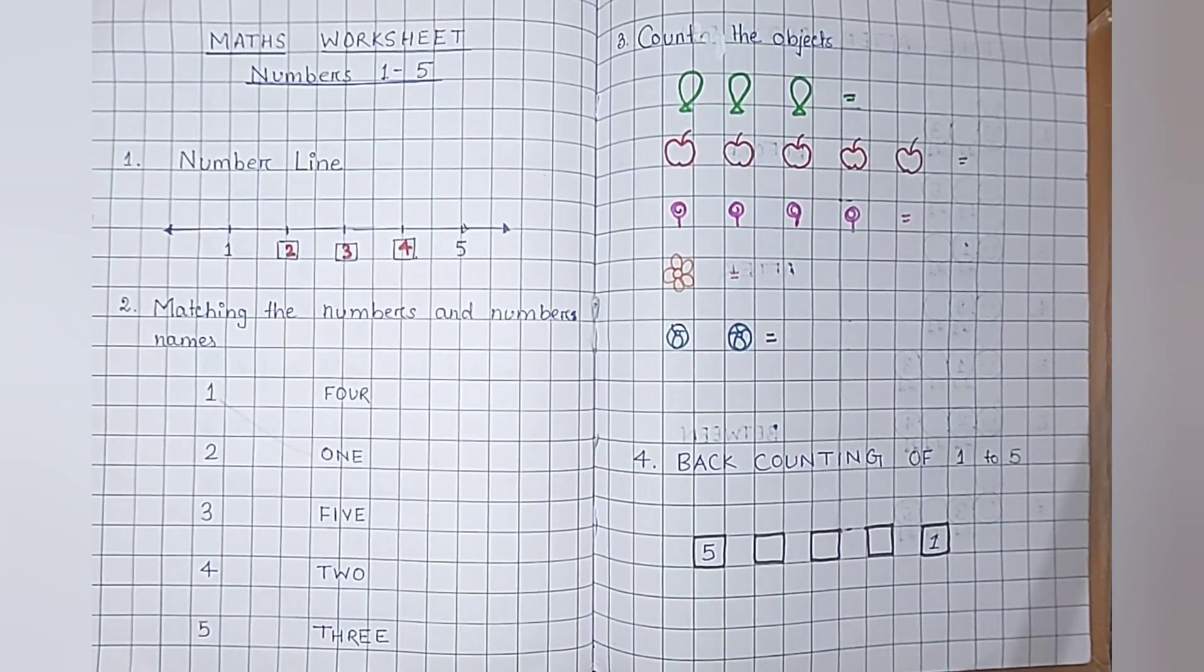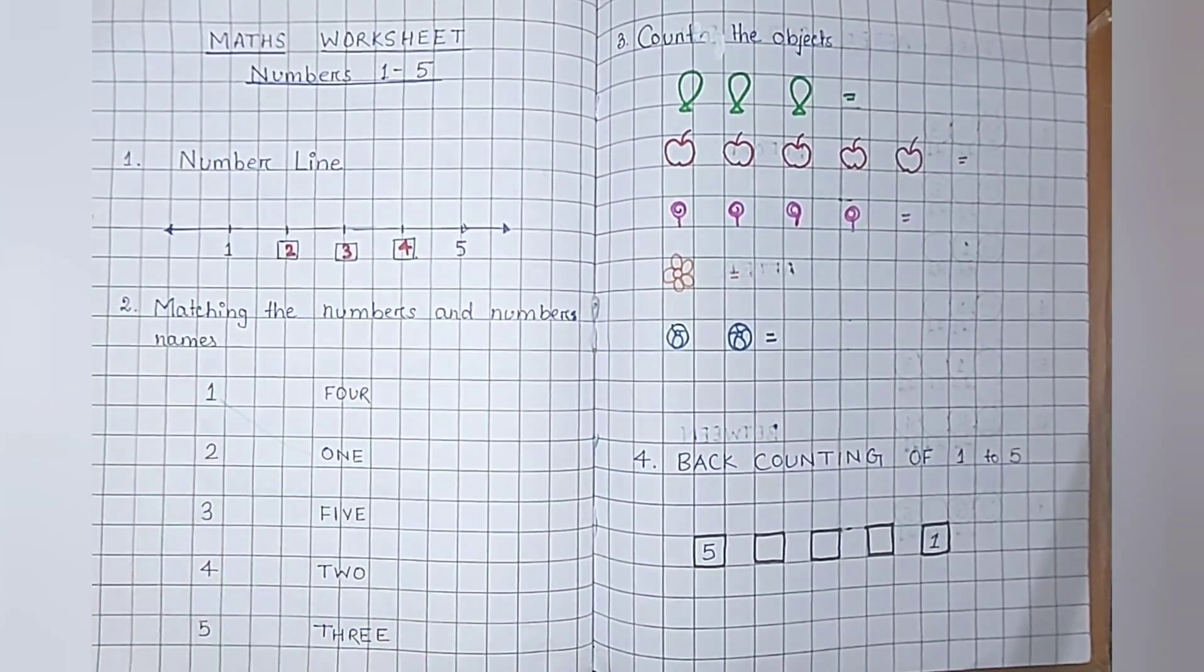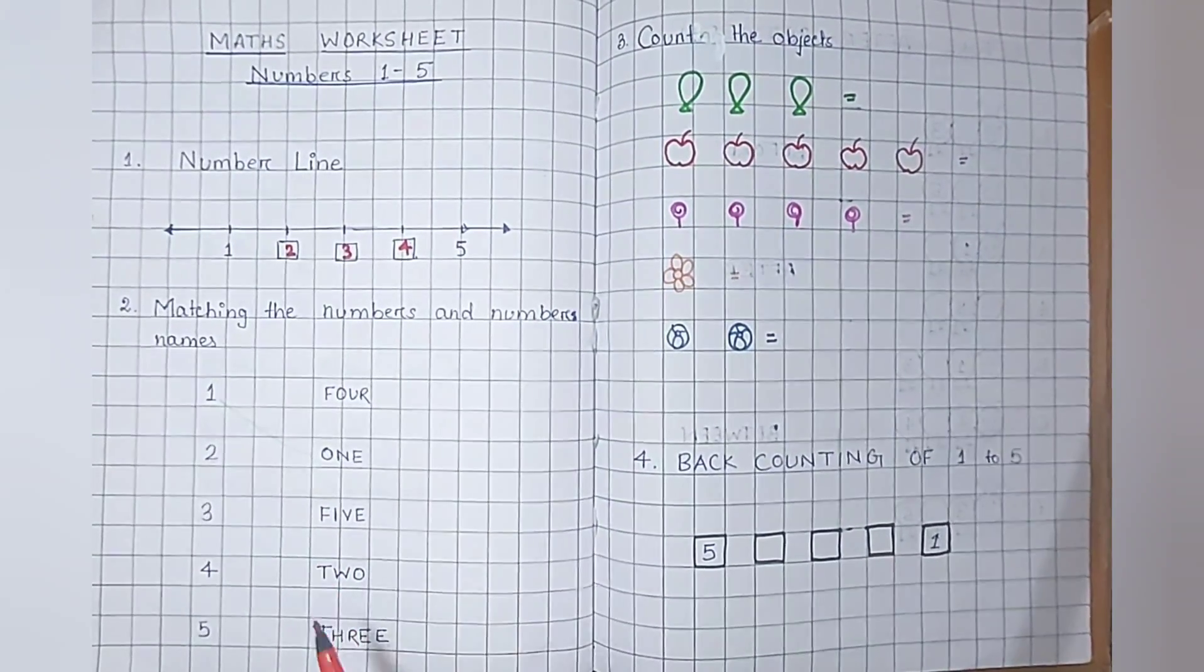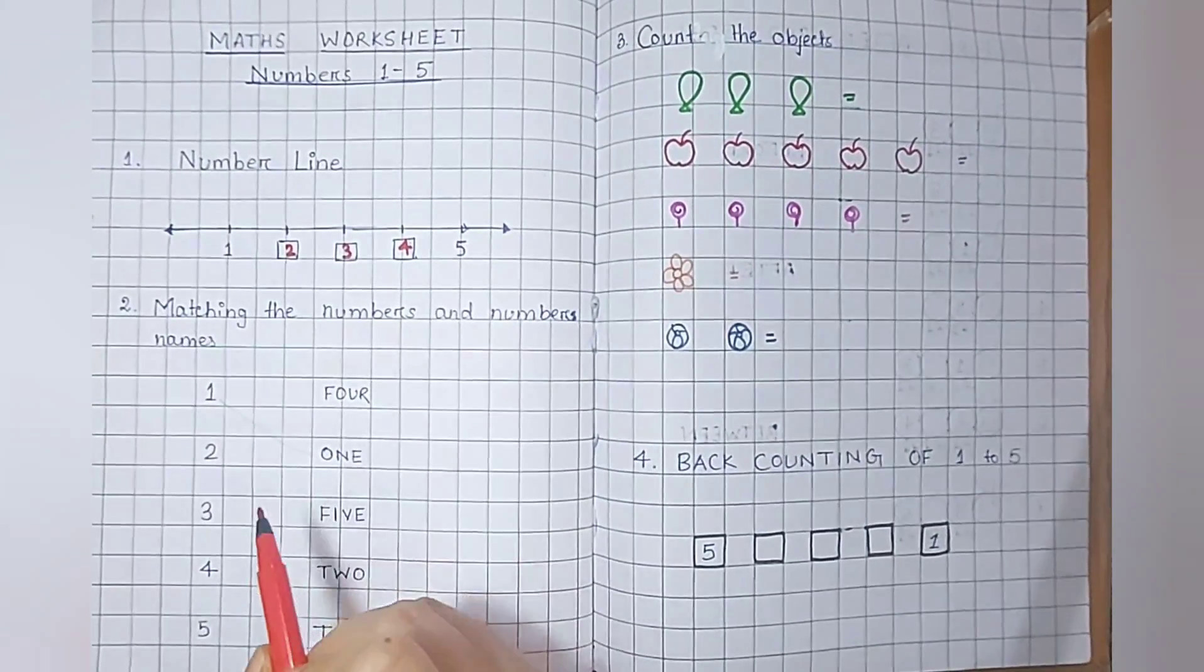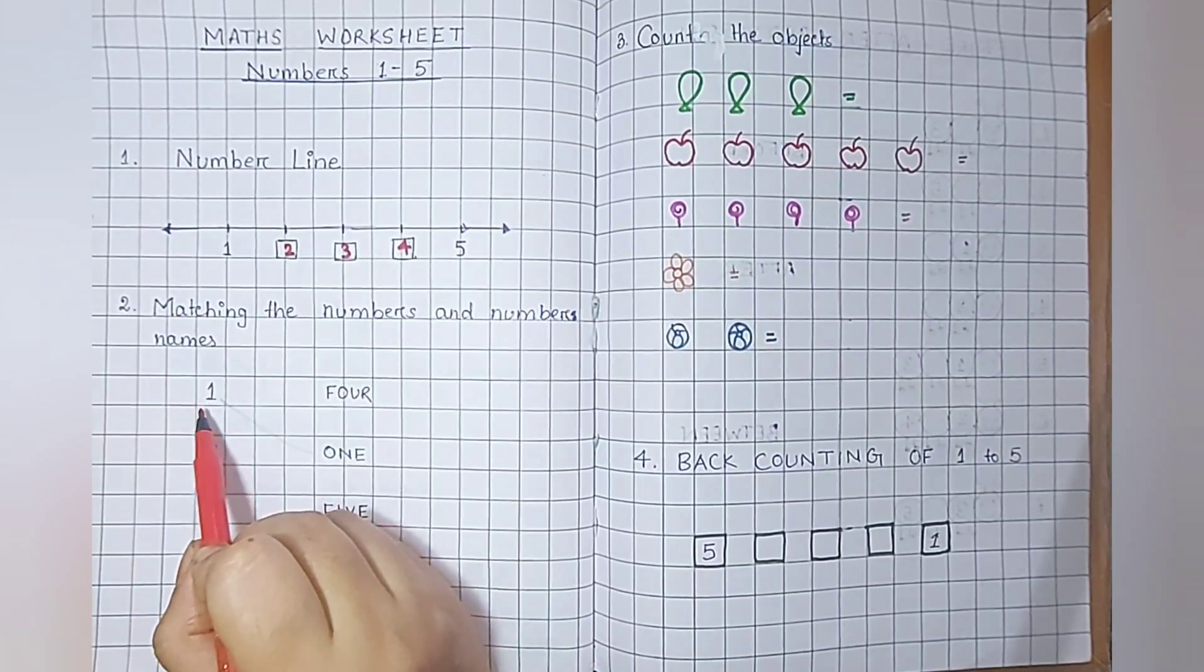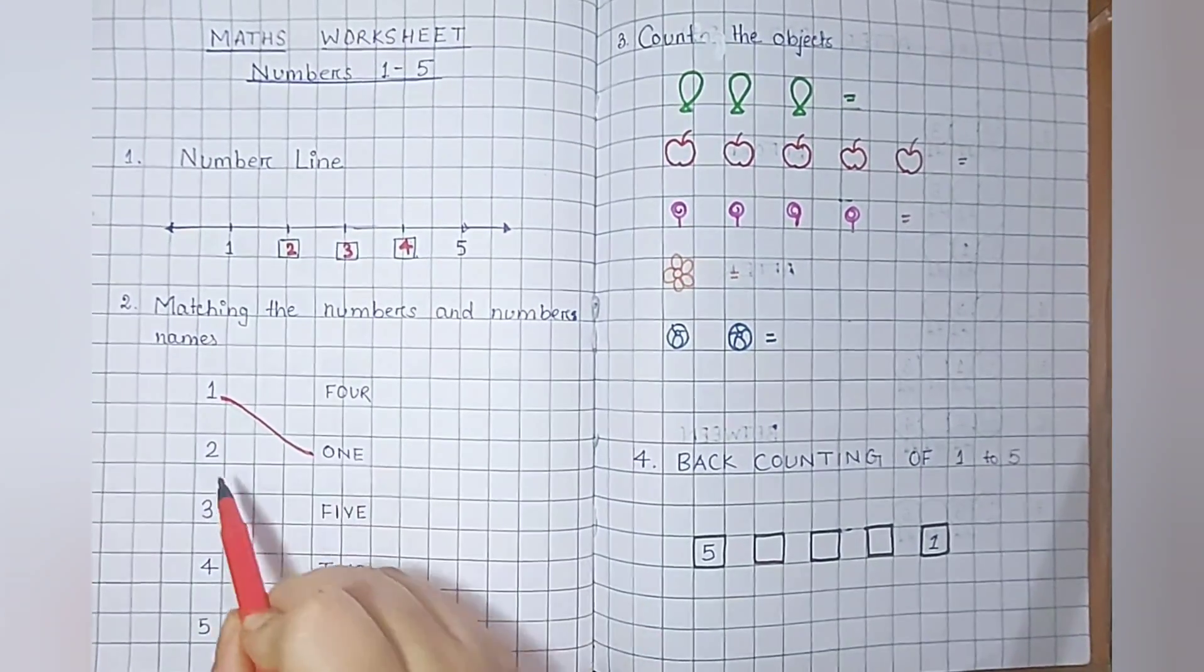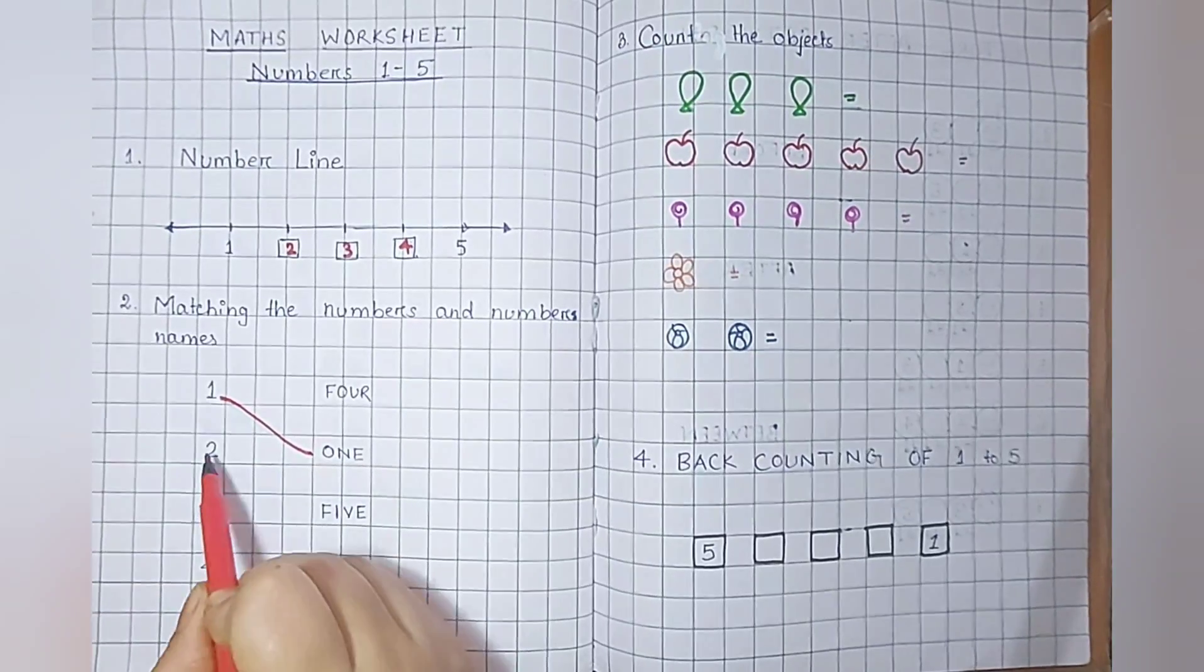The next question is matching the numbers and number names. It helps students to recognize the names of the numbers. First one is 1. What is the spelling? O-N-E. 1, 2, T-W-O, 2.